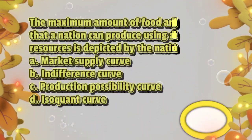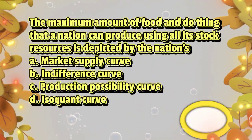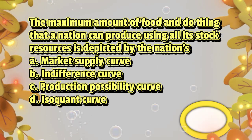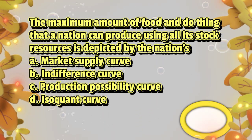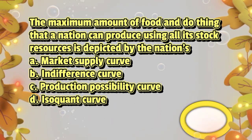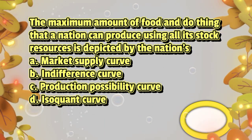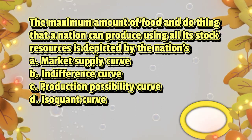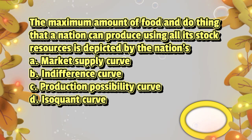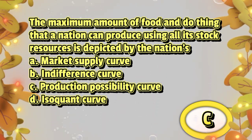The maximum amount of food and other things that a nation can produce using all its stock resources is depicted by the nation's: A. Market supply curve, B. Indifference curve, C. Production possibility curve, D. Isoquant curve. The answer is letter C.